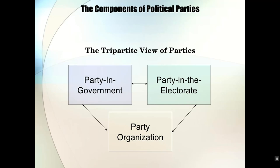Each individual in the party in government has to keep their position, which sometimes means they won't cooperate with the party to the extent that the party in the electorate might want. For example, a Democrat from a southern state might vote pro-life because their voters have different priorities, even though the party platform supports abortion rights. Similarly, Republicans in northern states sometimes vote pro-choice even though their party organization actively condemns it.